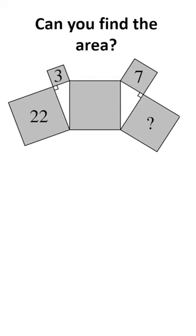Can you find the area? Now, to do this, we're just going to use the Pythagorean theorem that a squared plus b squared equals c squared for any right-angle triangle.